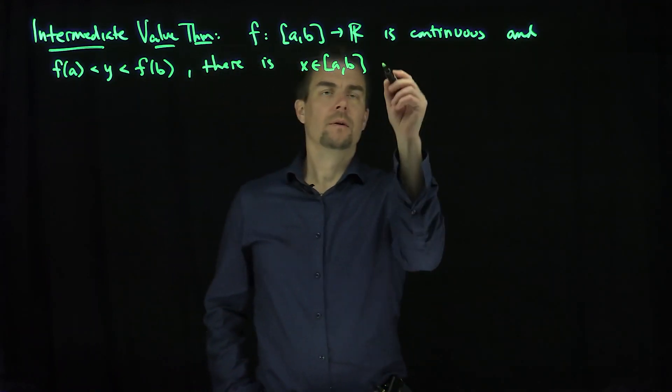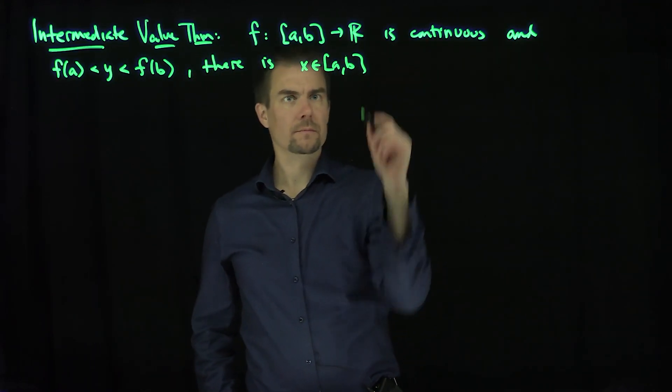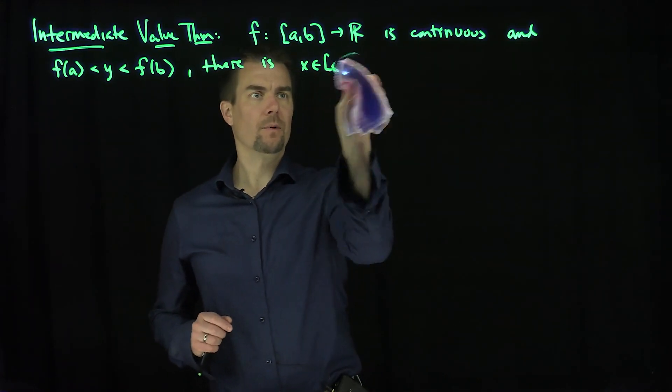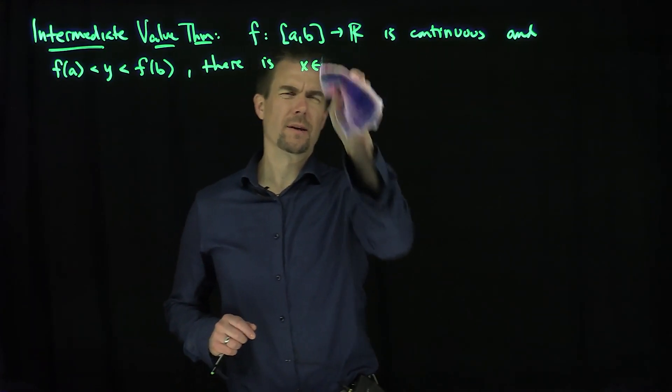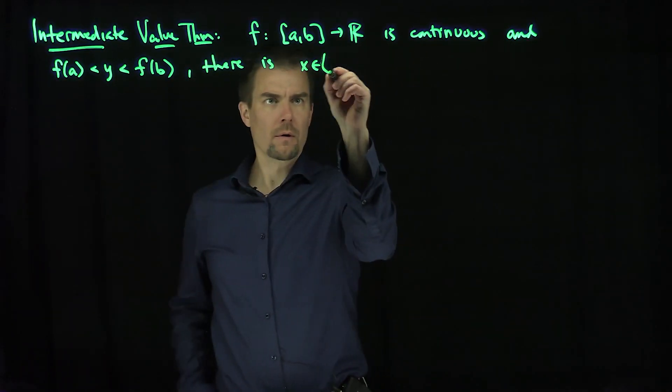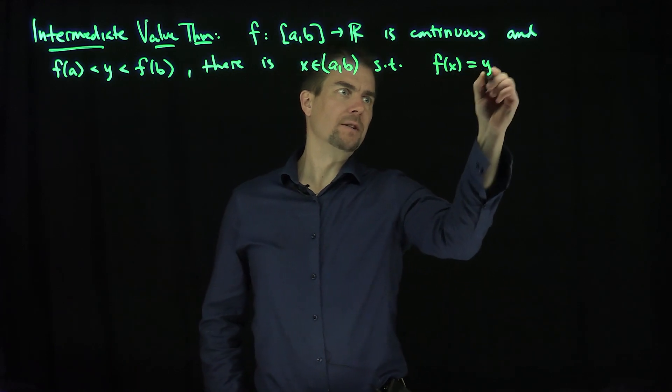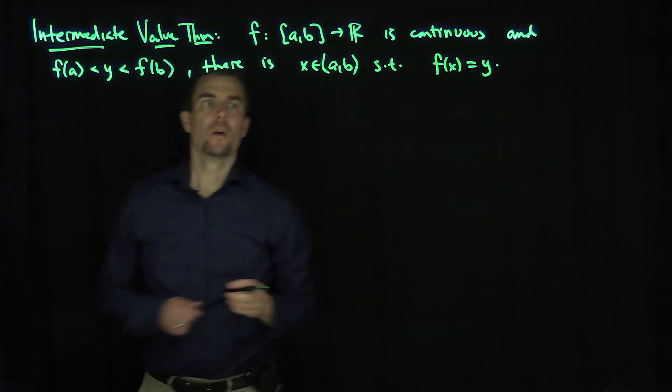It's not going to be a or b, so it's going to be open. Let's make sure that it's an open set. x in the open interval (a, b) such that f(x) is equal to that value y.